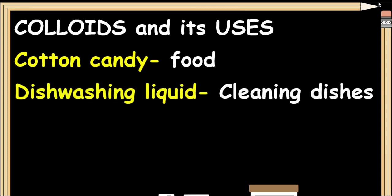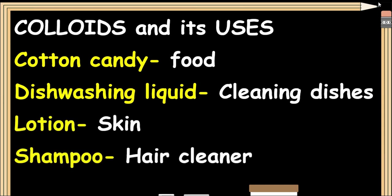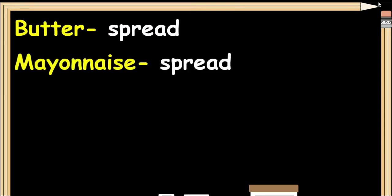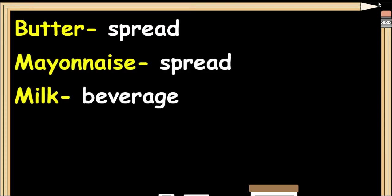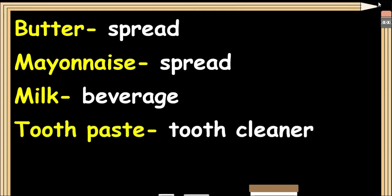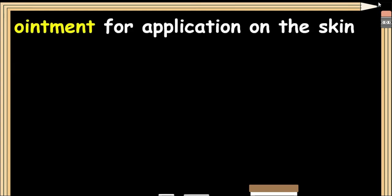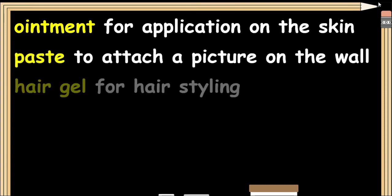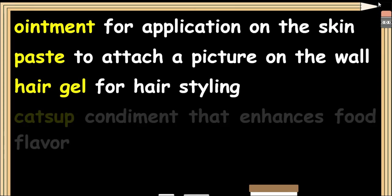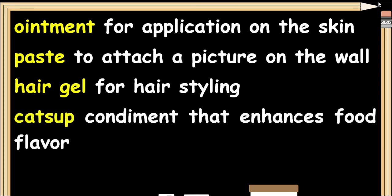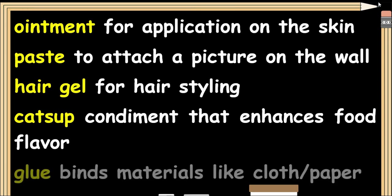Colloids and their uses: Cotton candy — food; dishwashing liquid — cleaning dishes; lotion — skin care; shampoo — hair cleaner; butter — spread; mayonnaise — spread; milk — beverage; toothpaste — tooth cleaner; ointment — for application; paste — to attach a picture on the wall; hair gel — for hair styling; ketchup — condiment that enhances food flavor; glue — binds materials like cloth or paper.